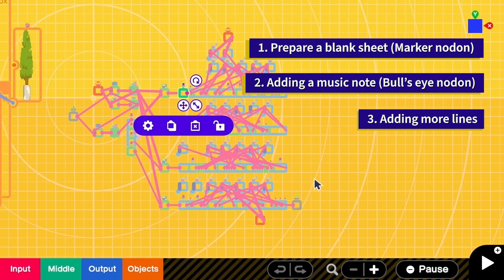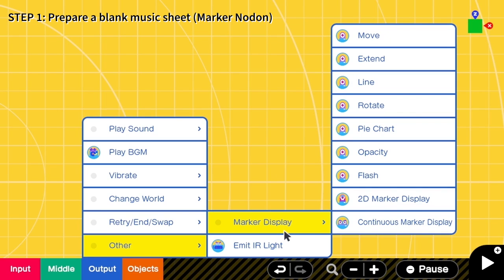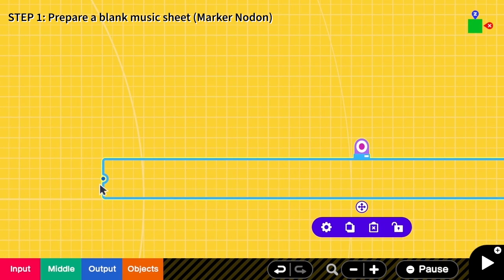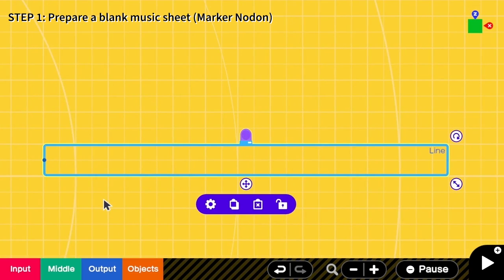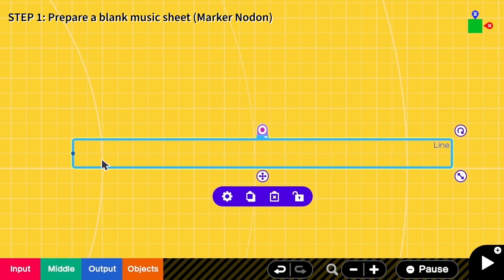In the first step, we are going to create a blank music sheet. To do that, we have to create a line marker nodon. We go to output, other, marker display, and then line. We increase the size. Basically there is a thin line here and it will move according to this input. When the input is 0, the line will be here, and if the input is 0.5, it will be here, and if the input is 1, the line will be there.